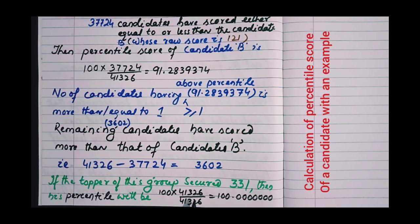41,326 candidates have scored either equal to or less than the topper, and 41,326 candidates have appeared in this session. And the percentile is found to be 100.